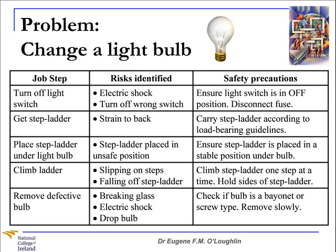The D part of SREDM is where we determine the safety precautions for the risks for each step. So for the step 'turn off a light switch', where the risks might be the wrong switch or electric shock, the safety precautions are that we must ensure that the light switch is in the off position and perhaps even disconnect the appropriate fuse so that there will be no electric shock. We can apply these procedures of recording, evaluating and determining the precautions for each of the steps as we go down through the table.